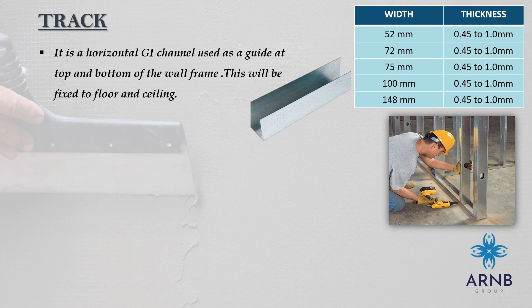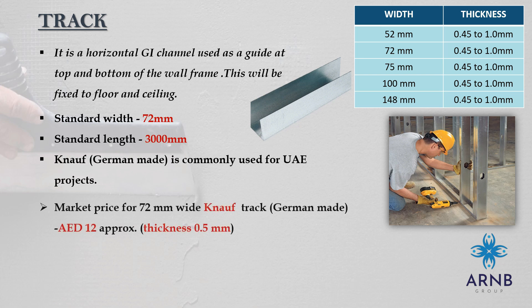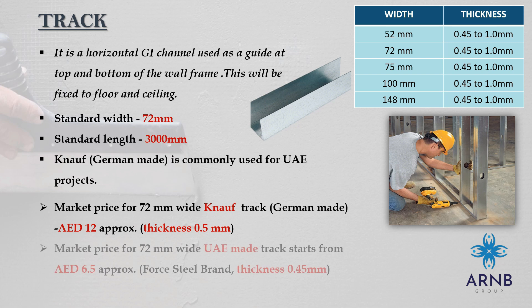As shown in the table, the thickness of the track will range from 0.45 mm to 1 mm, with widths of 52 mm, 72 mm, 75 mm, 100 mm, and 148 mm. Track with 72 mm width and 0.45 mm or 0.5 mm thickness are most commonly used in UAE. Standard length available in market is 3000 mm or 3 meters. German-made Knauf brand is majorly used in UAE projects with a market price starting from 12 AED, while UAE-made brands such as 4 Steel are also available starting from 6.5 AED.